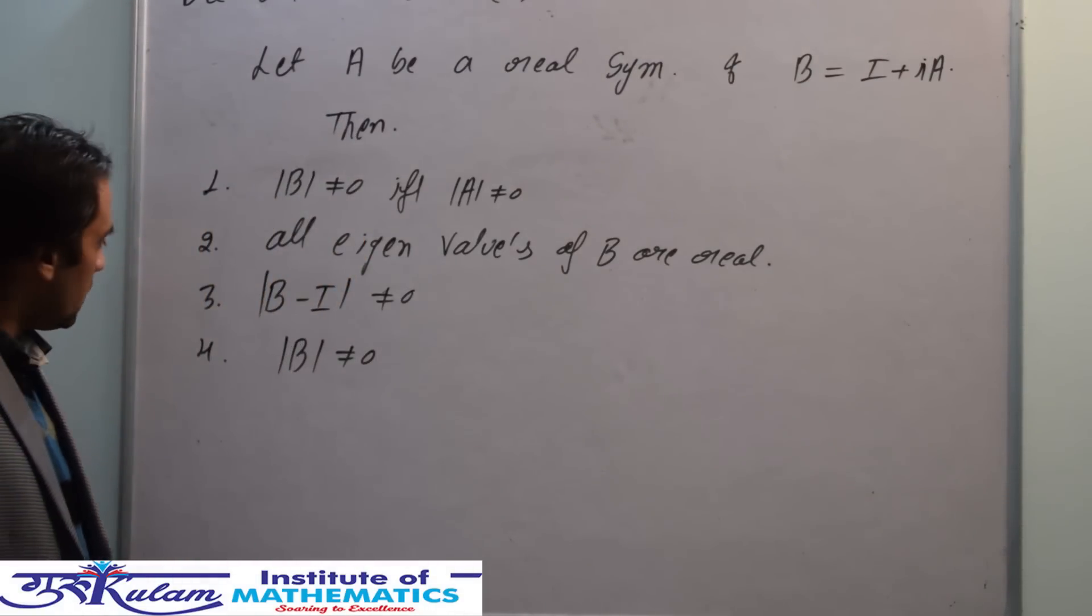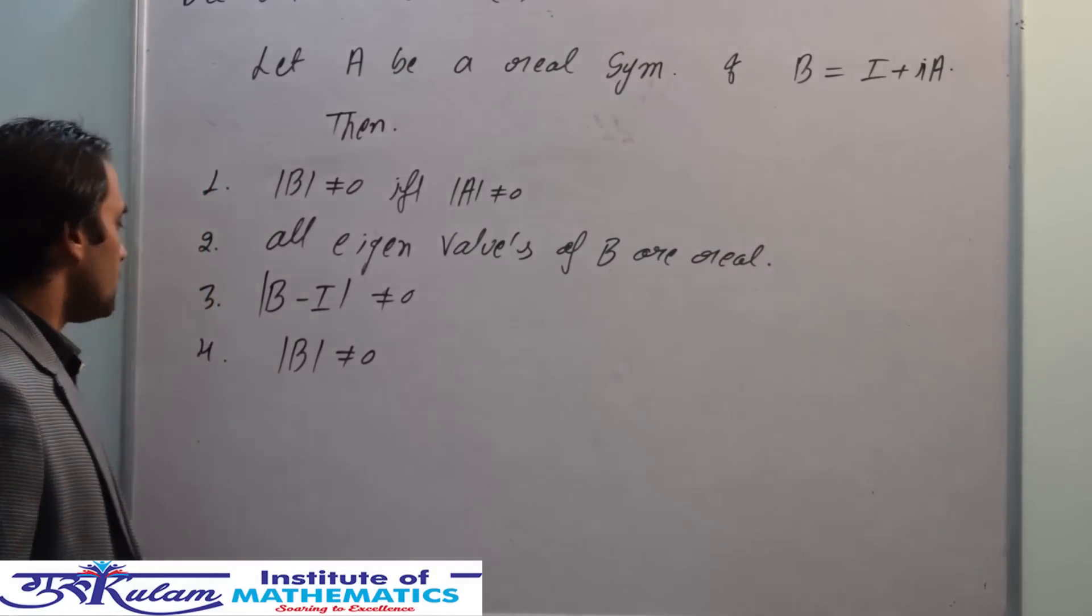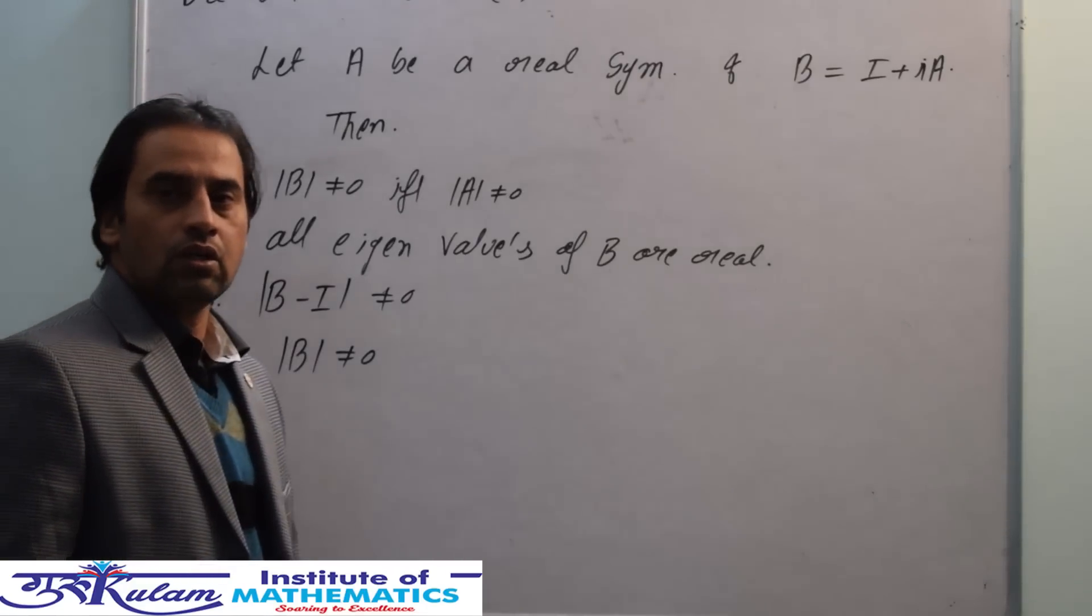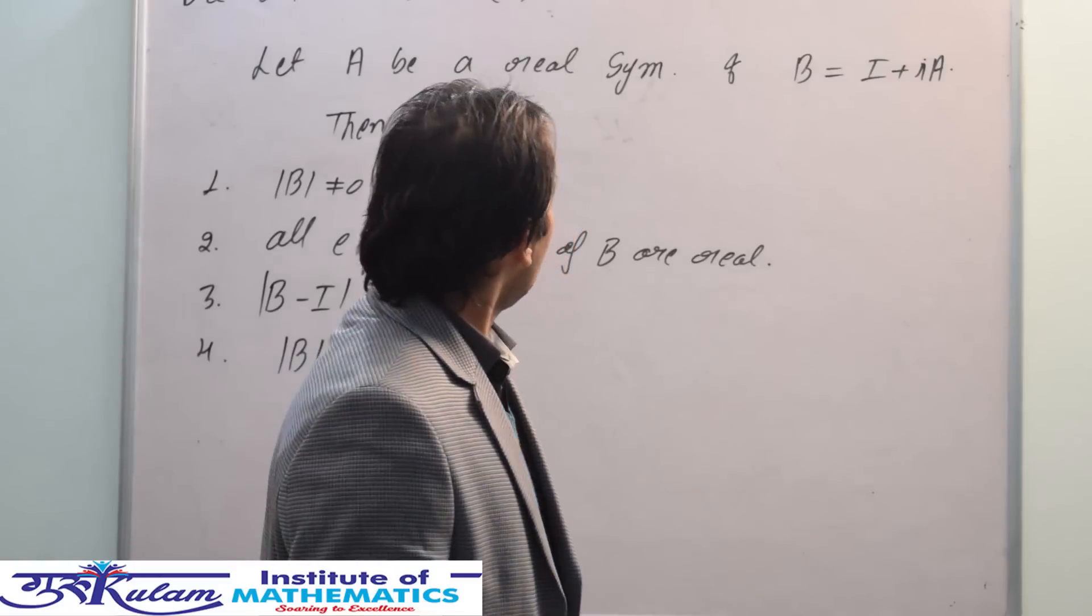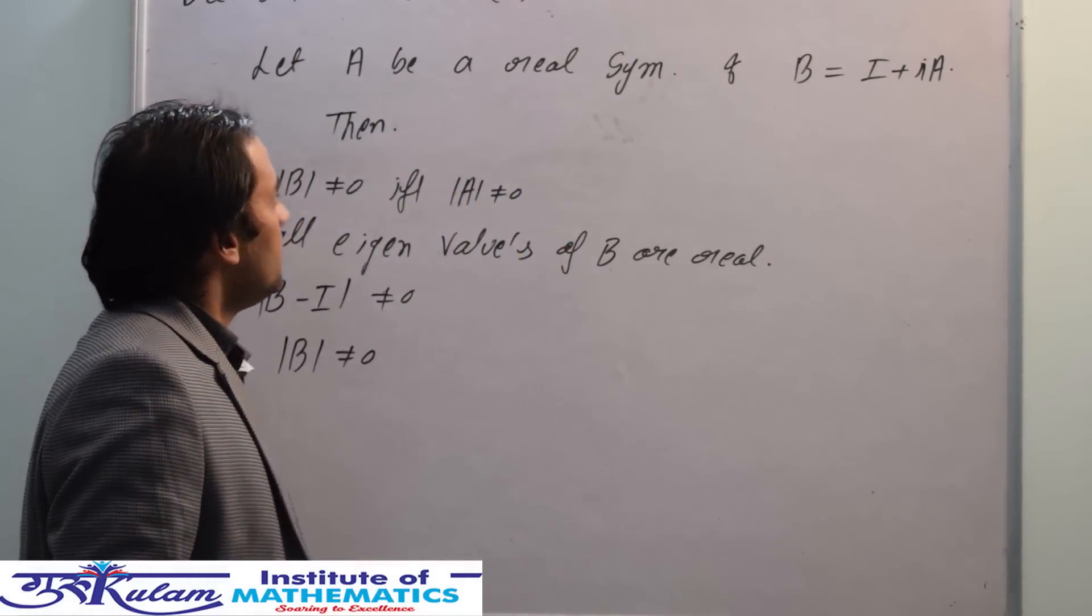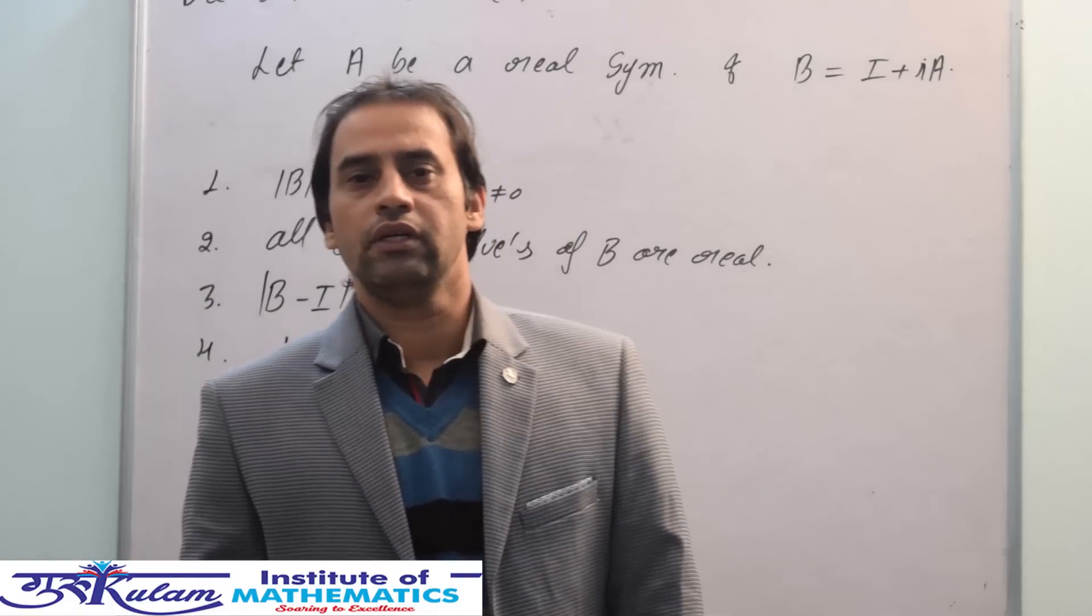Option 4: the determinant of B is non-zero, meaning B is non-singular. Given information is A is a real symmetric matrix, and we know that the eigenvalues of real symmetric matrices are always real.